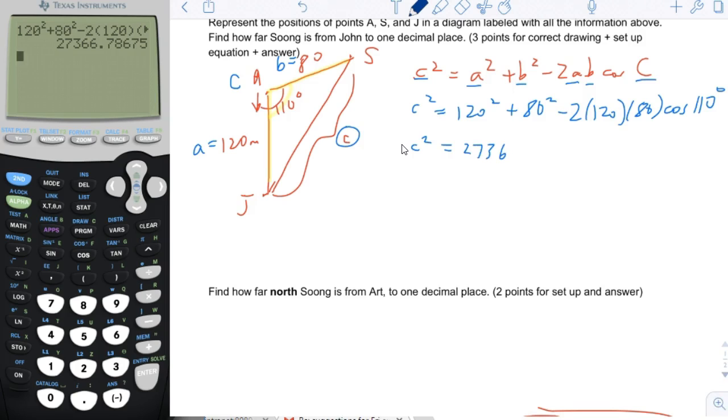And then I'm going to take the square root of this. And then I get 165. c is equal to 165.4. So that is the answer for this part.